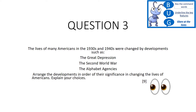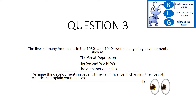The first thing, as always, that we're going to do is apply our BUG method. We need to box the command word, or in this case, our command sentence: 'arrange the developments in order of their significance.' We're going to underline the key features, which are the Great Depression, the Second World War, and the Alphabet Agencies. Then we're going to glance at the hints, which in this case is just the number of marks.